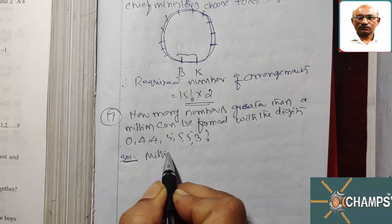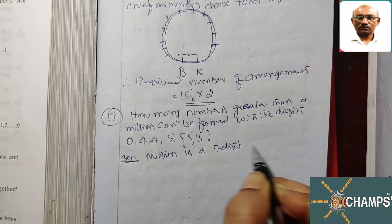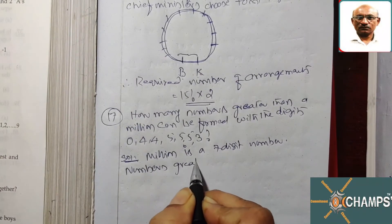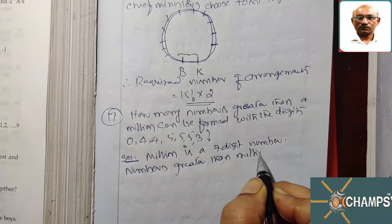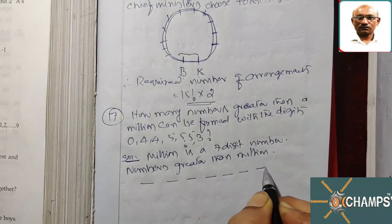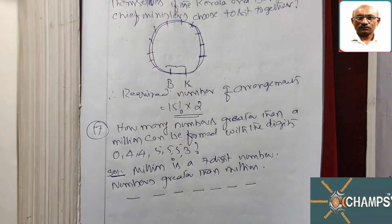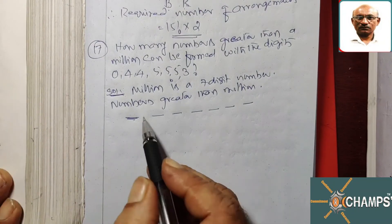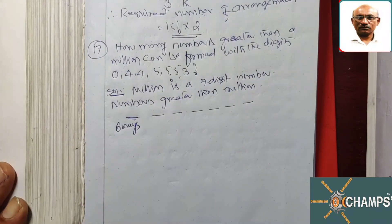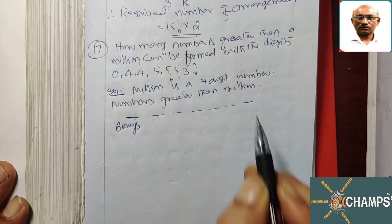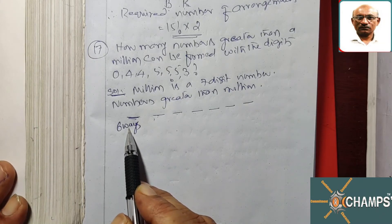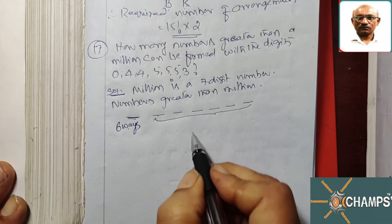A million is a seven-digit number, so numbers greater than a million require seven places. For the first place, zero is ruled out — we cannot put zero here, so this place can be filled in 6 ways. Now there are 6 remaining places; out of the seven numbers, one is used in the first place, so the 6 remaining places can be filled with the remaining 6 numbers in 6! ways.